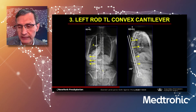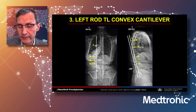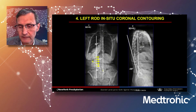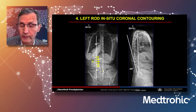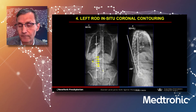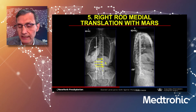I continue with the left-sided rod and push it down in a cantilever maneuver to correct the main thoracolumbar curve — pushing the rotation down, translating medially — then capture that rod in the top thoracic construct. Next, I do left-sided in-situ coronal correction to translate the deviated apex of the left-sided curve. The right-sided rod remains free above except for its distal attachment. Finally, I take the right-sided rod and use the apical reduction screws on the concavity to translate and derotate the lumbar apex to the right-sided rod.